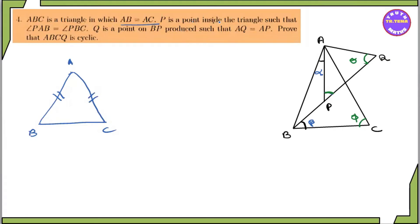B is a point inside the triangle. We are going to take a look at angle BAB and angle BBC. So B is the point on BC.